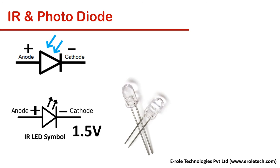Photodiode is used to receive these infrared rays. Photodiode turns on when IR rays fall on it.